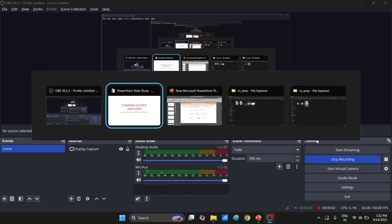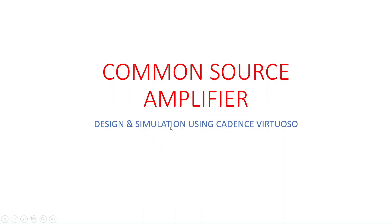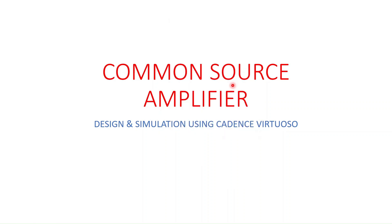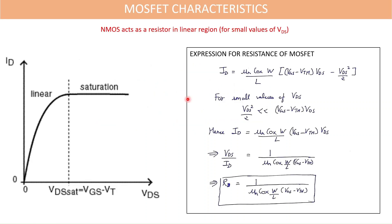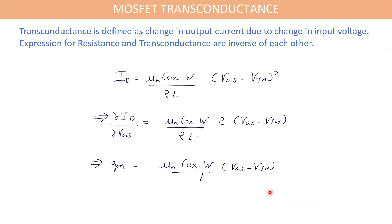Hello everyone, welcome back to the channel. In this video we are going to discuss one of the most important circuits in analog VLSI, which is the common source amplifier. First let us discuss some basics. We know that the MOSFET acts as a resistor in the linear region only for small values of VDS. To obtain the expression for resistance of a MOSFET, we use the expression for drain current in the linear region and can drop the square term for small values of VDS.